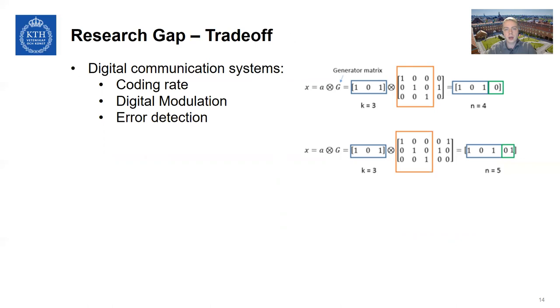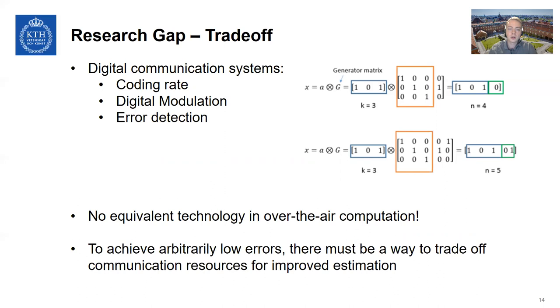So in digital communication systems, we have a way of trading off communication resources to improve the errors over the channel. For instance, the coding rate can be adapted, so you can employ a longer coding rate, which reduces your efficiency of communication, but improves the error rate over the network. Similarly, the digital modulation rate can be reduced or an error detection code can be employed to retransmit when errors actually happen. However, in over-the-air computation, there is no equivalent technology. So basically, we have this error floor that we cannot breach at the moment. And in order to achieve arbitrarily low errors, there must be some way to trade off communication resources for improved estimation.